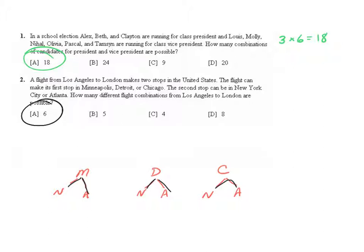You may have noticed as well that we could again use the fundamental counting principle. Three possibilities for the first stop, two possibilities for the second stop, gives us six total combinations.